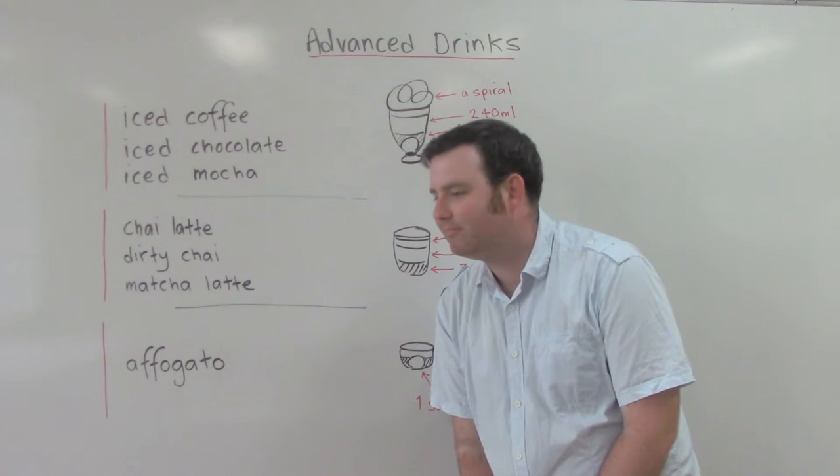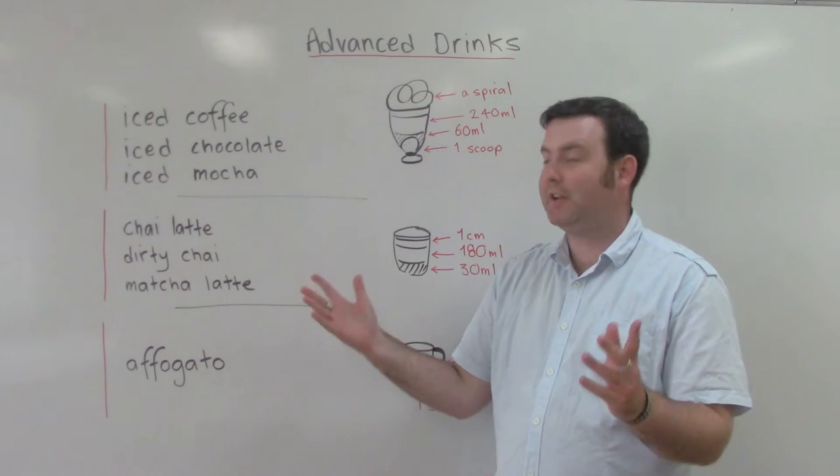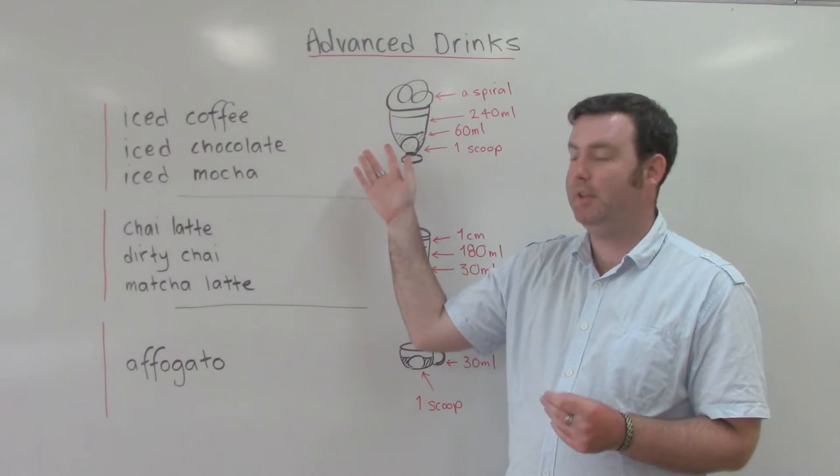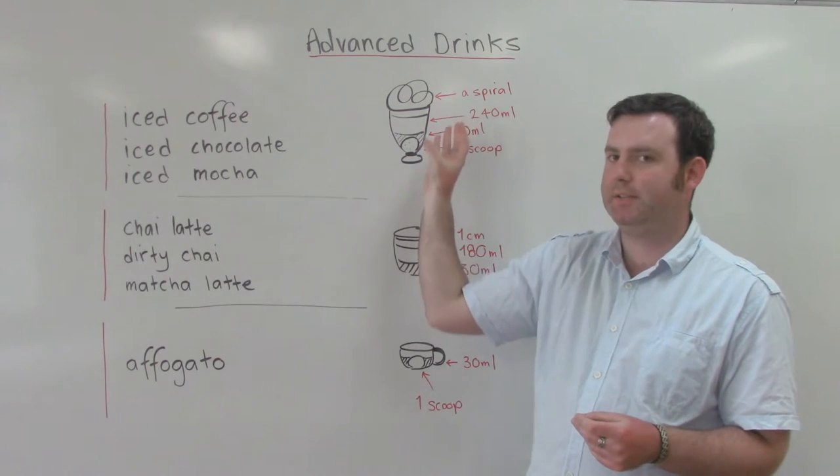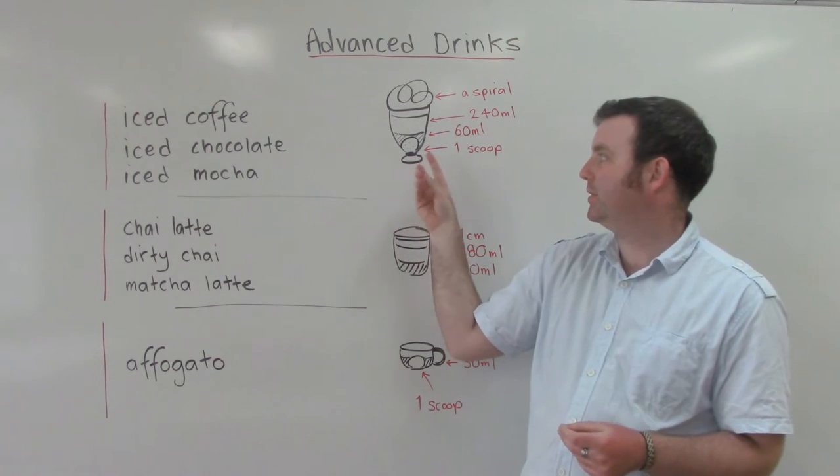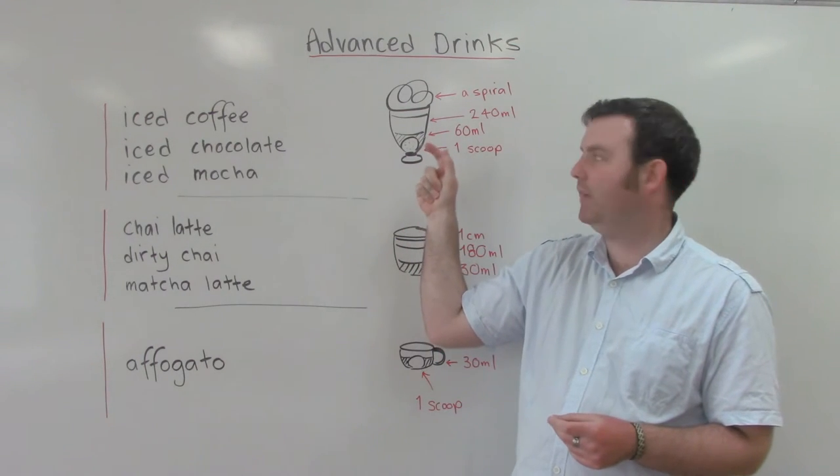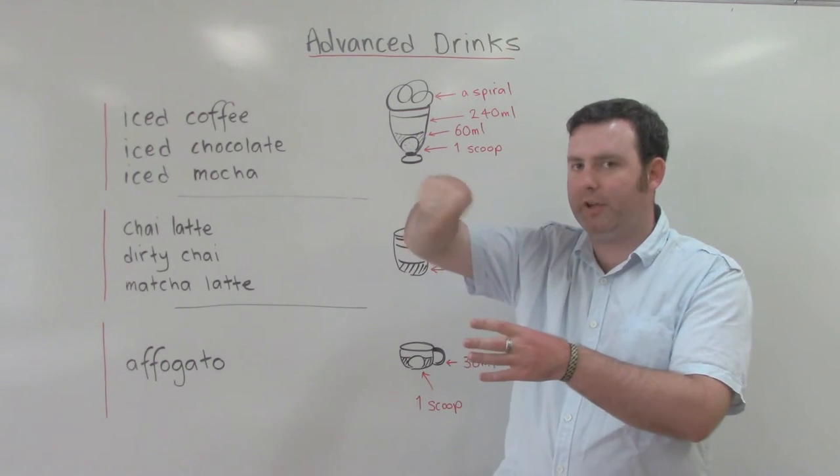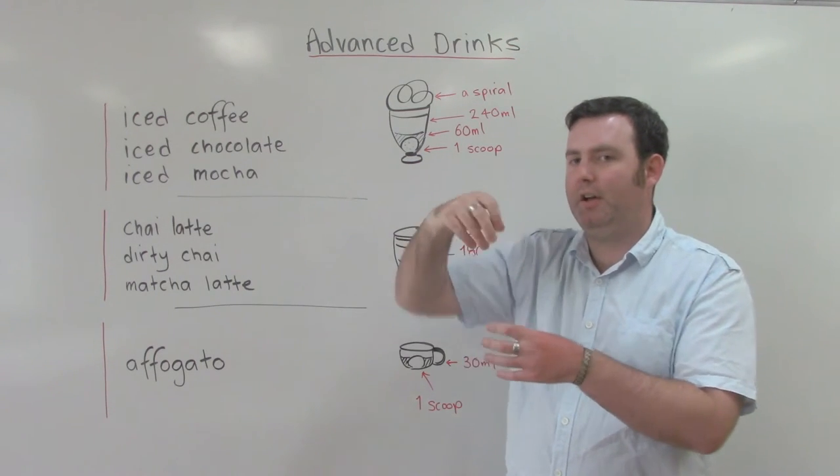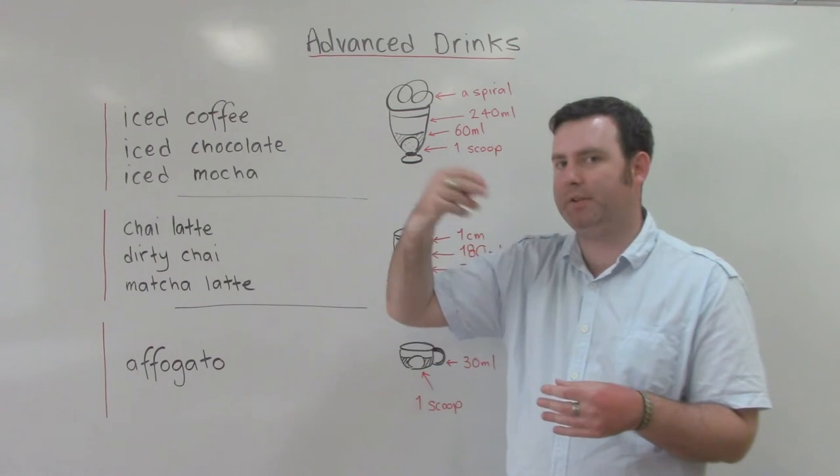I don't think that's going to be ready for a while. So I can tell you about some other cold drinks, starting with an iced coffee. Now, this one is in a glass, not a cup. We start with a scoop of ice cream, 60ml of coffee, 240ml of milk, and then a spiral of cream on the top. We normally have a straw to drink this with, and a spoon to eat the ice cream.